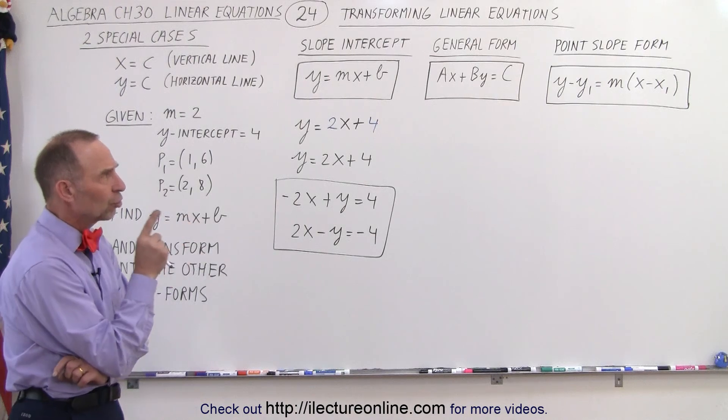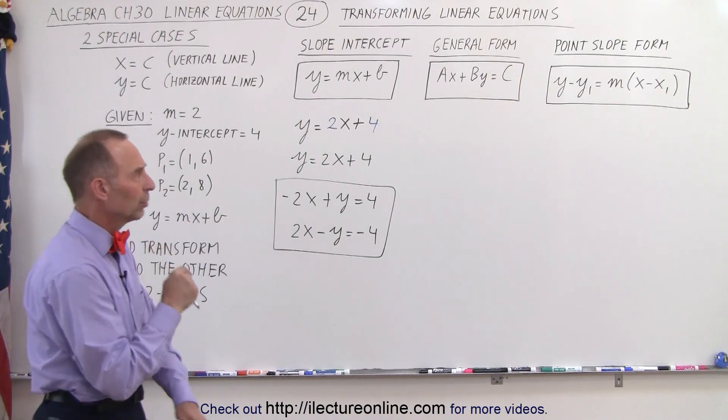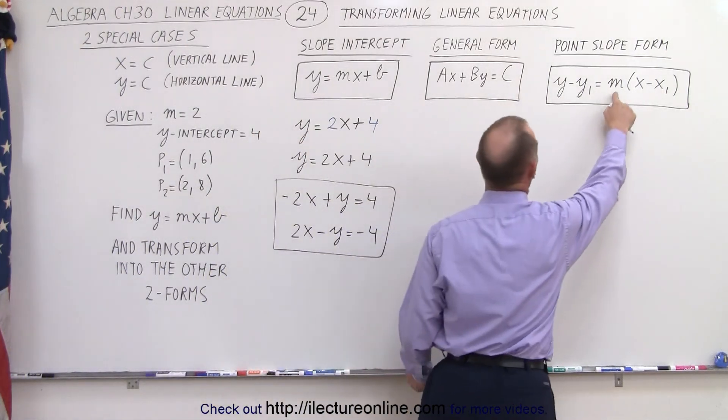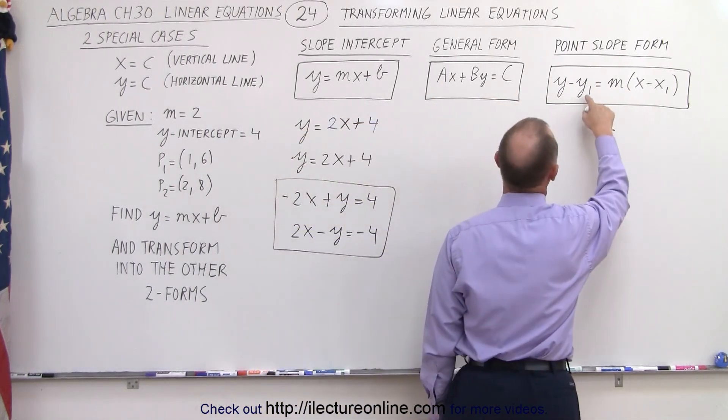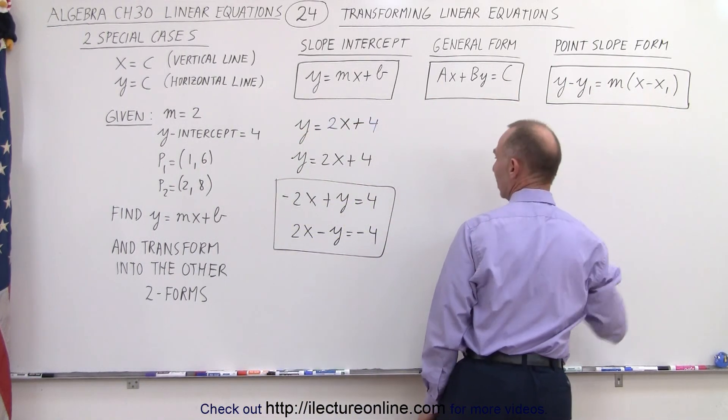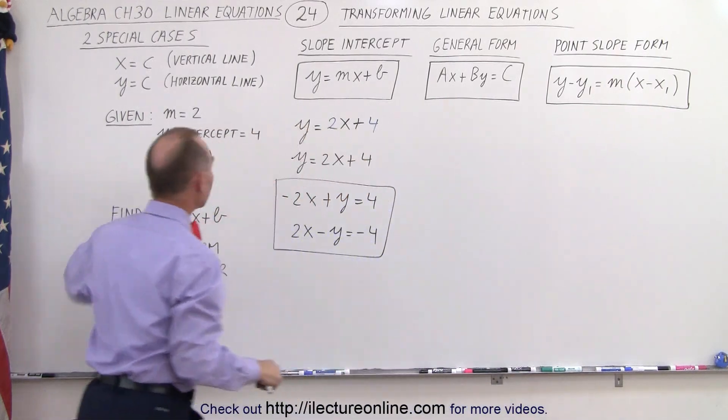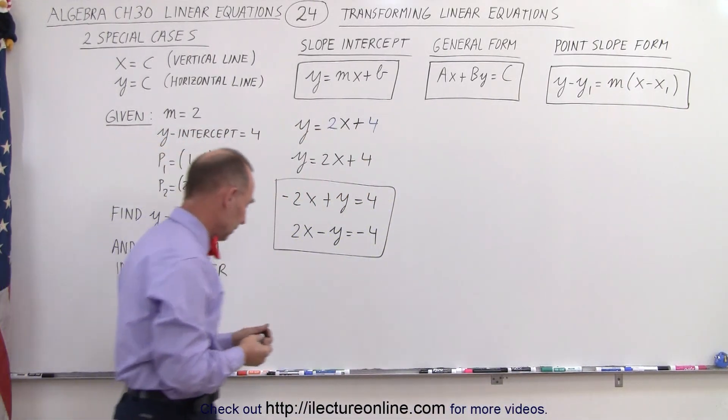But now how do we turn that into the point-slope form? Well, notice that we need to have the slope, which is given to us, and we need to have one point, y1 and x1, and we can pick either one of these. So let's go ahead and pick one of them and plug that in.